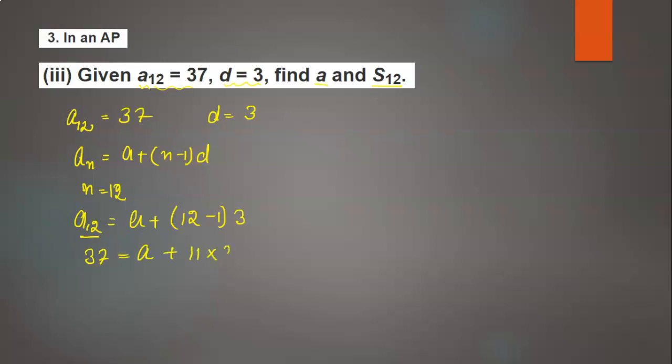Here 11×3 is 33, which is shifted to the left-hand side with the sign changing, so 37 - 33 = a. Therefore a = 4, the first term.